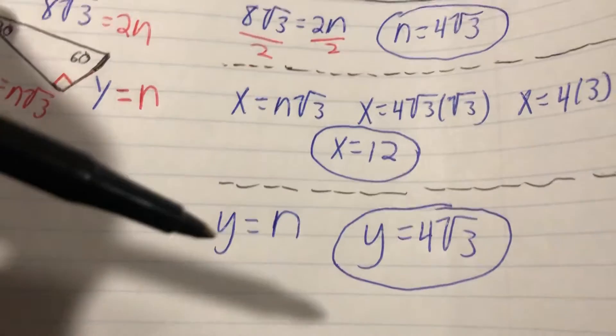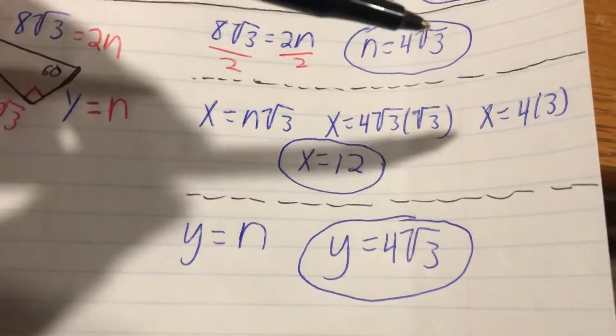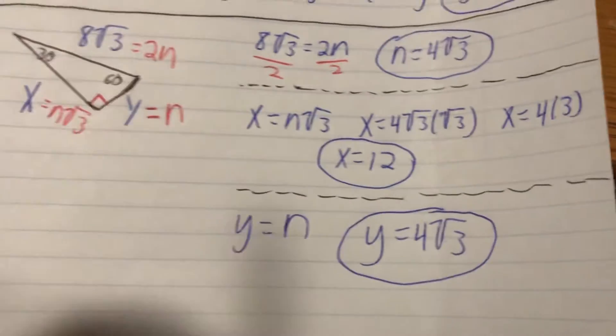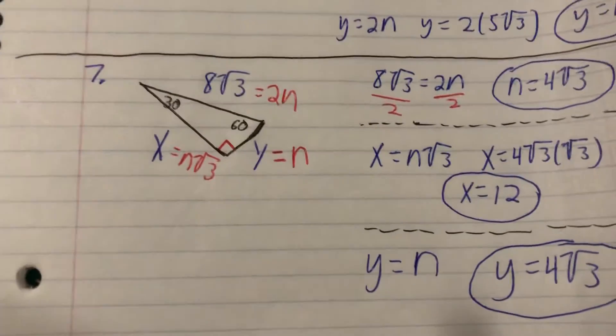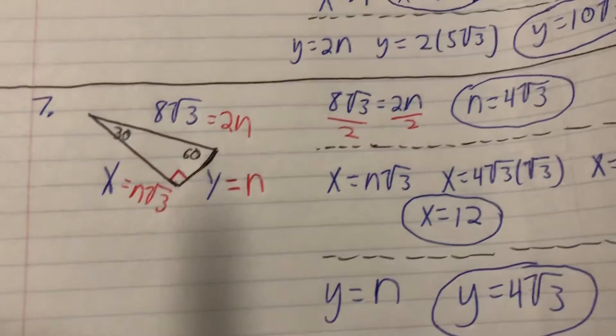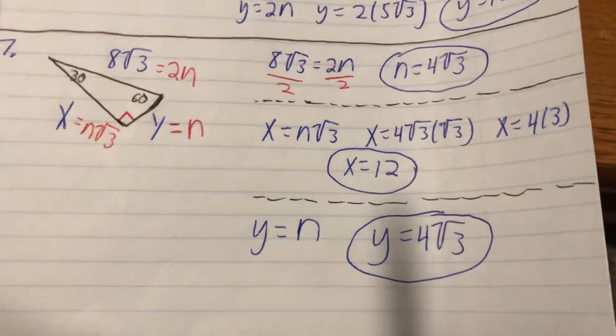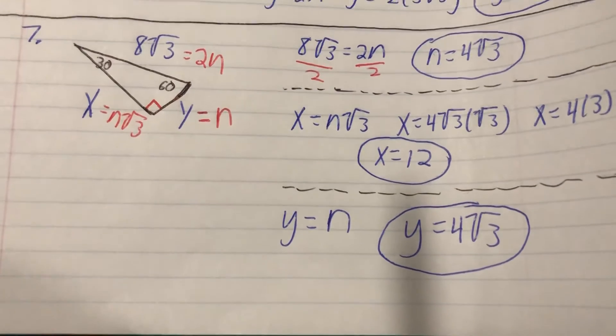y is equal to n, so our work is done—y equals 4√3 that we already solved for n. So that's it. Basically, label your triangles, solve for n, and then plug in to find the missing variables. Good luck on the assignment, and you guys know my email if you have any questions.